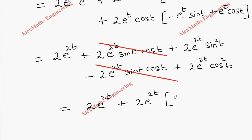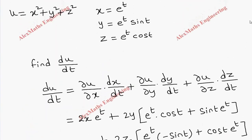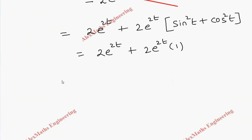After that we are left with sin square t plus cos square t. Sin square t plus cos square t equals 1. So we have 2 e power 2t plus 2 e power 2t into 1. So finally du by dt is 4 e power 2t by adding these two.